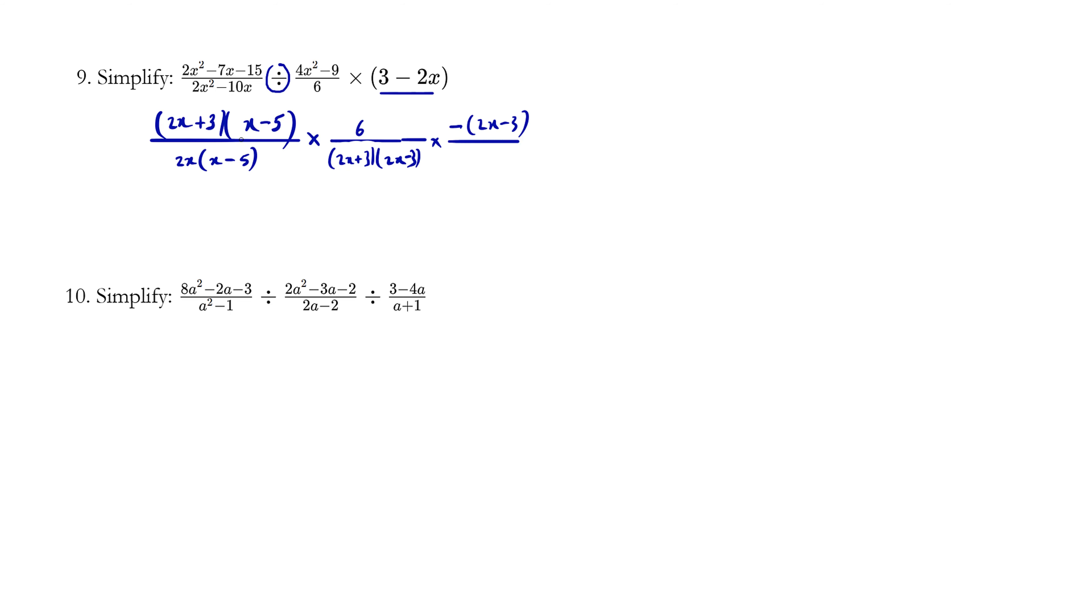So let's simplify by canceling these. We have two x minus three canceling. But remember that there's a negative one here still. The two x plus three is cancelled diagonally.